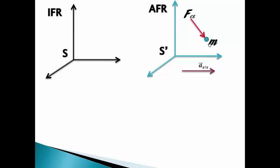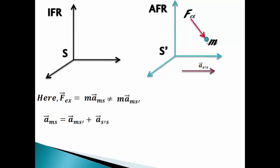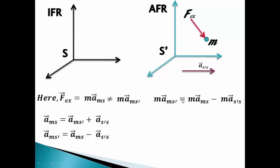According to Newton's law, the external force will be equal to mass into acceleration M·A(S). Note that it is not equal to mass into acceleration in S'. Therefore, the acceleration of mass with respect to S will be equal to the acceleration of mass in S' plus the acceleration of S' itself. Simplifying and multiplying mass on both sides, we get M·A(MS) will be equal to M·A(MS') minus M·A(S'S).